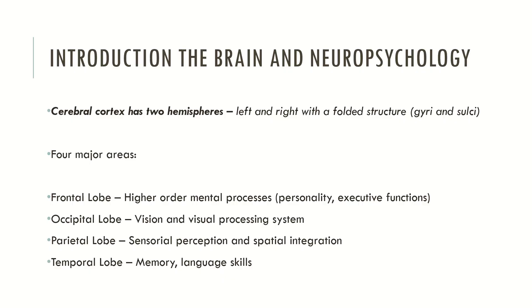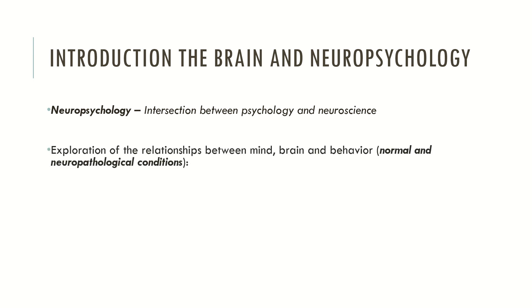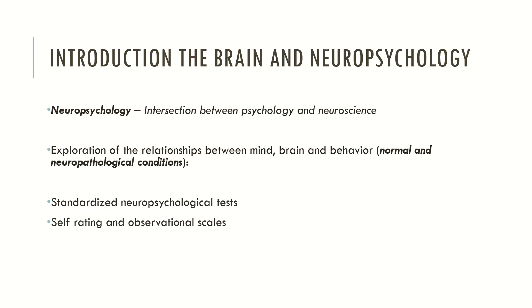The cerebral cortex is divided into four major areas — frontal lobe, parietal lobe, occipital lobe and temporal lobe — and these areas are responsible for all mental processes and neurocognitive functions. So, why is the brain so important to neuropsychology? Neuropsychology is the intersection between psychology and neuroscience, and it is concerned with the exploration of the relationships between mind, brain and behavior, which could be normal and abnormal, but essentially the abnormal conditions are related to neuropathological diseases. Neuropsychology explores these relationships through several instruments: standardised neuropsychological tests, self-rating and observational scales, brain imaging and electroencephalography.